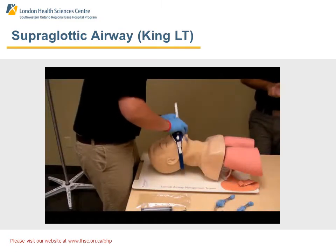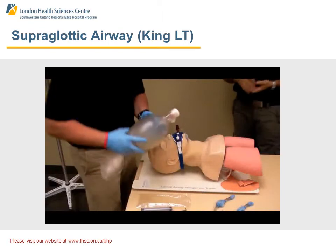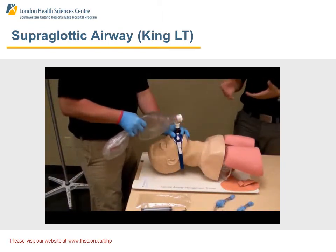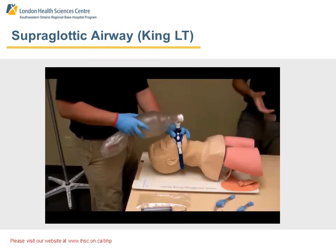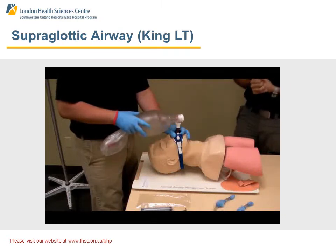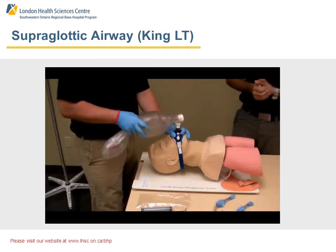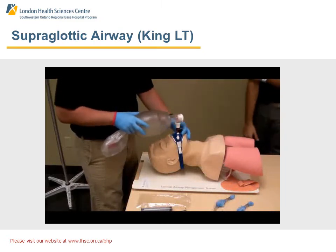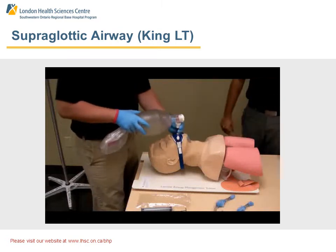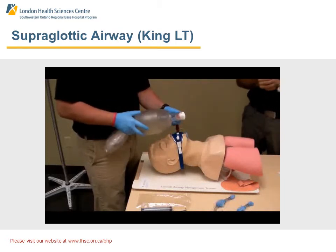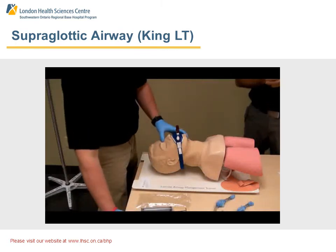Some common troubleshooting techniques: if you've inserted the King and are having difficulty bagging, the two most common problems are either the King LT is inserted too far — in which case withdraw it slightly and try to re-bag — or the cuffs are not inflated enough to ensure a seal. A maximum of two attempts is allowed. If the second attempt at King LT insertion fails, revert back to proper BVM technique with an oral or nasal airway.